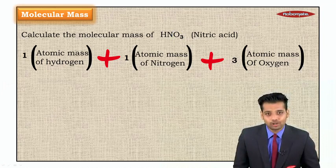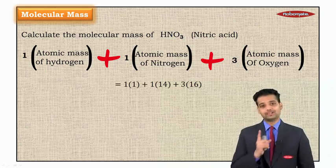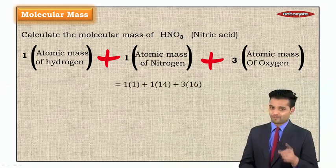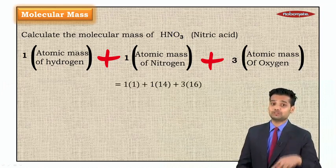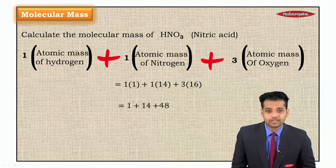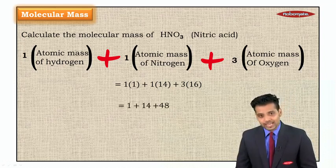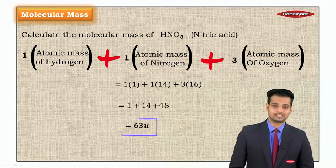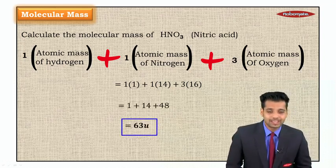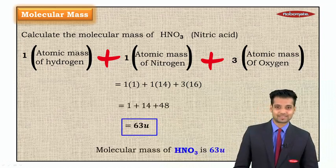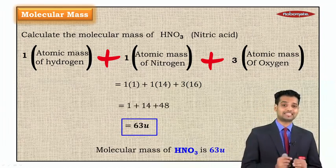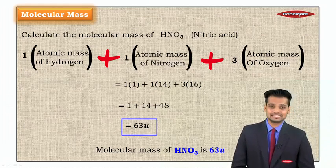Let's see what we get as an answer. We get one into one plus one into 14 plus three into 16. One plus 14 plus 48 is 63u. That is unified mass. Hence the molecular mass of HNO3 is 63 Dalton.